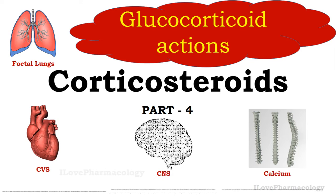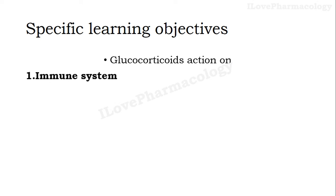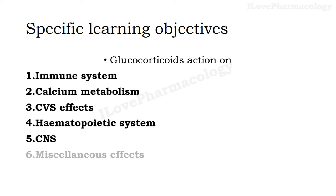Hello dear students, welcome to the class on corticosteroids part 4. In this session we will mainly concentrate on glucocorticoid actions. Coming to the specific learning objectives, at the end of this session we should be able to explain the relationship between glucocorticoids with the immune system, their action on calcium metabolism, cardiovascular system, hematopoietic system, central nervous system, as well as other important miscellaneous effects.